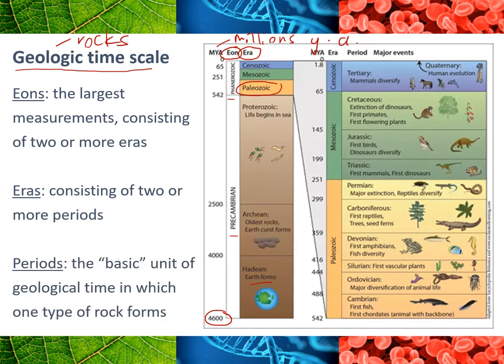Then the eras themselves are broken into what we call periods. These top three eras are zoomed in on the right showing all of the different periods within that. These are considered the basic unit of geological time but we're still talking about pretty huge periods of time. So if we look at the Cambrian period of the Paleozoic era, that went from 542 million years ago to 488 million years ago — so we're still looking at dozens of millions of years.